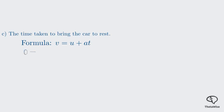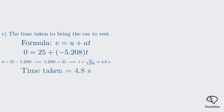Let's substitute our values. The final velocity V is 0. The initial velocity U is 25. The acceleration A is negative 5.208, and we're solving for T. This gives us 0 equals 25 minus 5.208T. Rearranging, we get 5.208T equals 25. Dividing 25 by 5.208 gives us approximately 4.8 seconds. So, the time taken to bring the car to rest is 4.8 seconds. And there you have it, the full solution to the first problem, broken down into manageable steps.